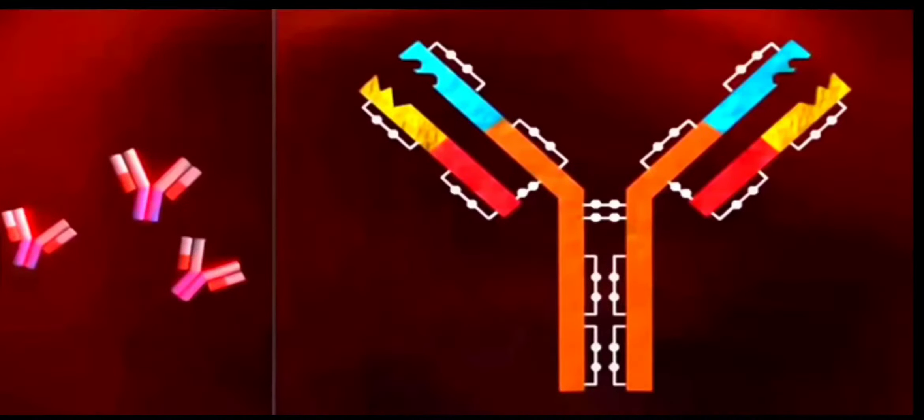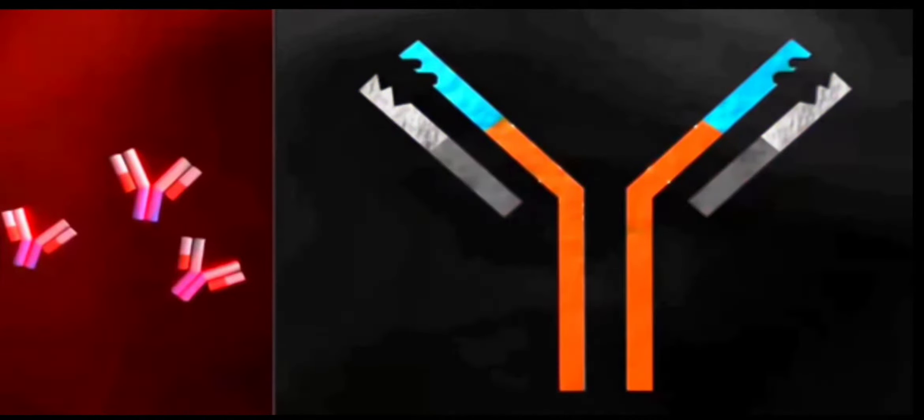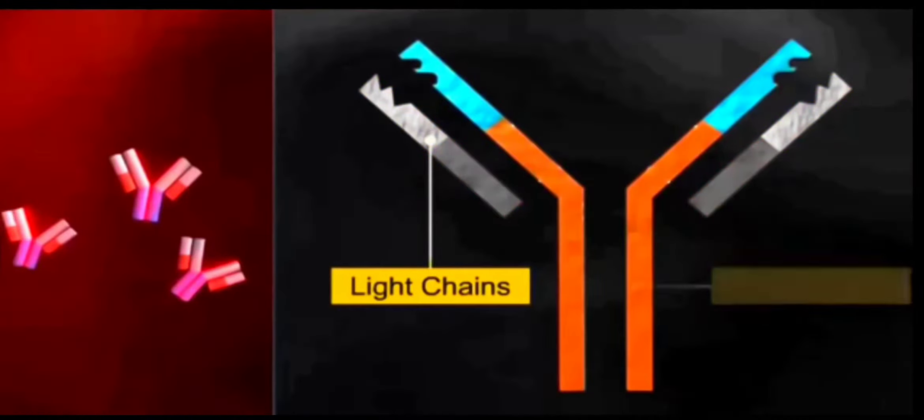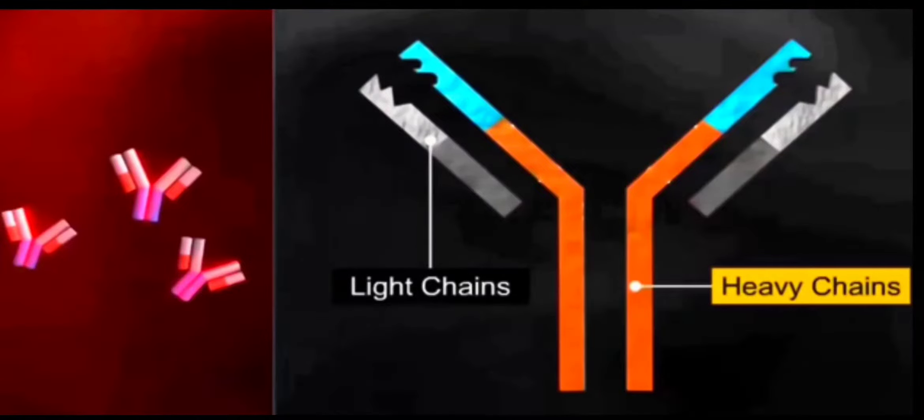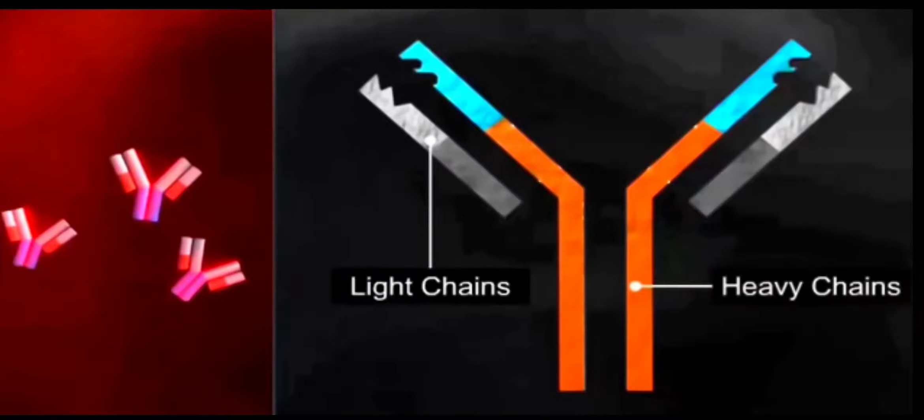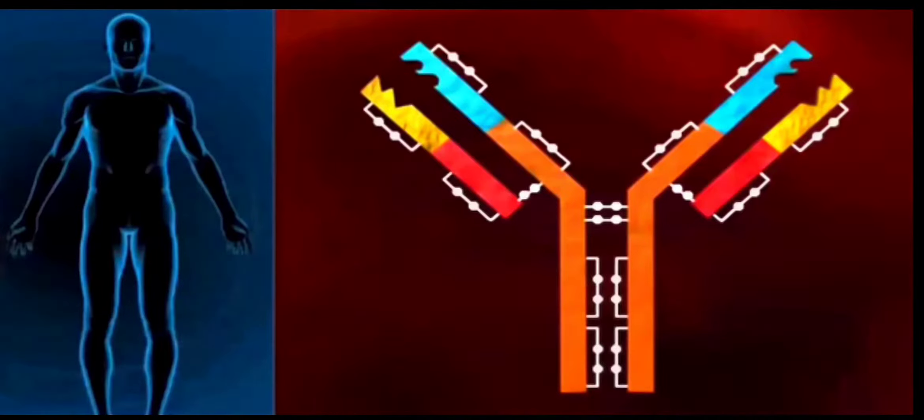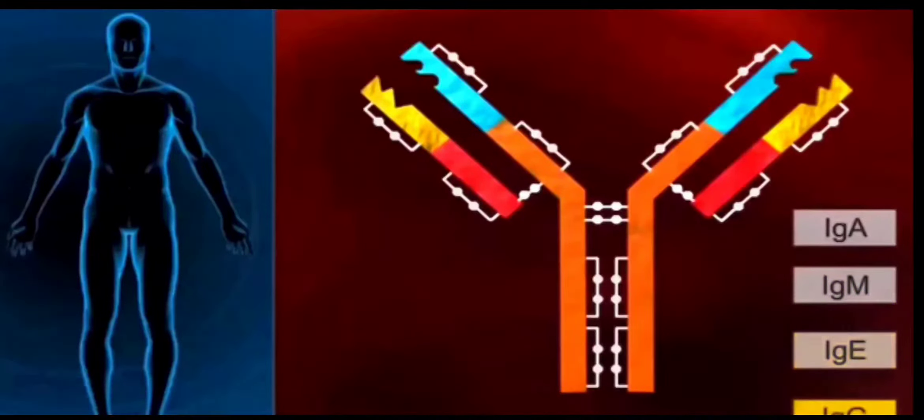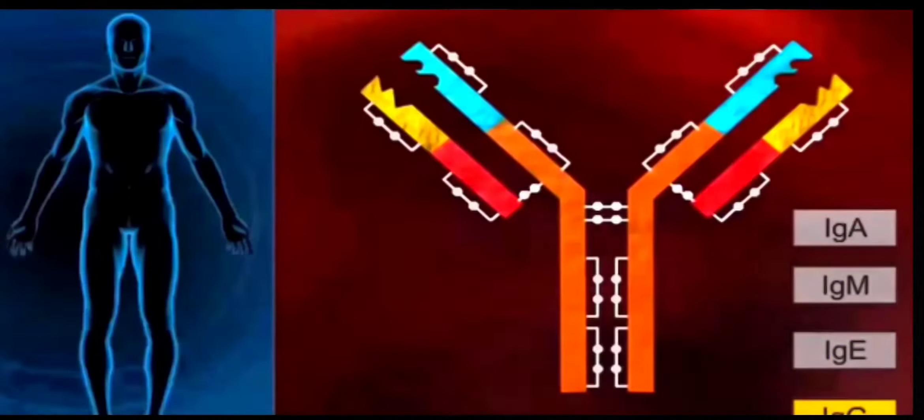This is the structure of an antibody. It has got two small chains and two large chains. These small chains are called light chains, and these long chains are called heavy chains. So this structure is also called H2L2 structure - two heavy and two light chains. These antibodies may be of different types like IgA, IgM, IgE, or IgG. Ig stands for immunoglobulin.